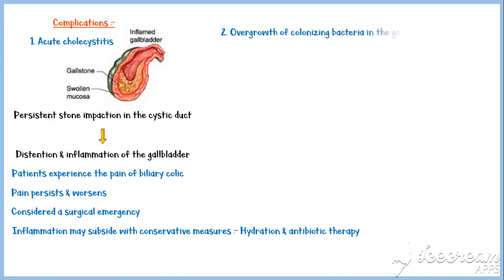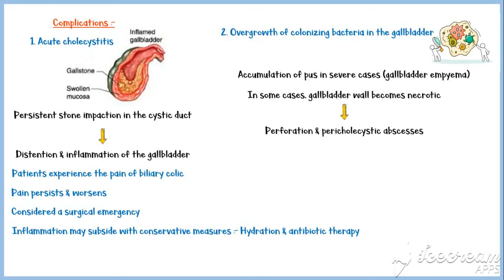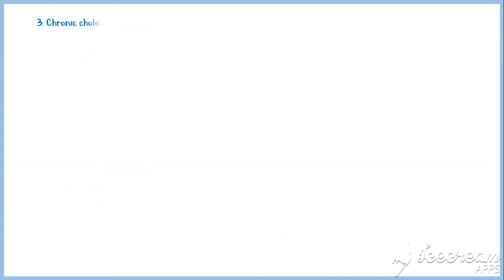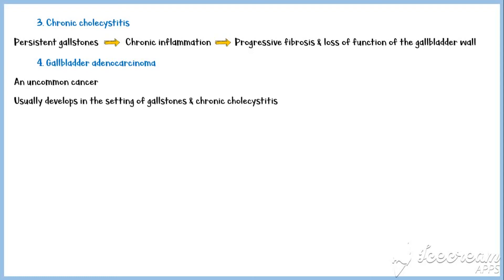Overgrowth of colonizing bacteria in the gallbladder is another complication, and in severe cases, accumulation of pus in the gallbladder, termed gallbladder empyema, occurs. In some cases, the gallbladder wall may become necrotic, resulting in perforation and pericholecystic abscesses. Chronic cholecystitis occurs when persistent gallstones lead to chronic inflammation, ultimately causing progressive fibrosis and loss of function of the gallbladder wall. Gallbladder carcinoma is an uncommon cancer which usually develops in the setting of gallstones and chronic cholecystitis.